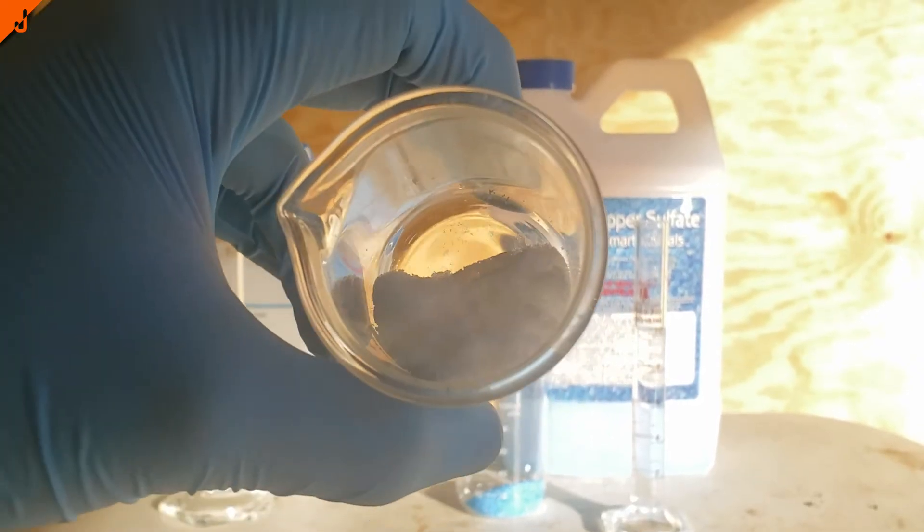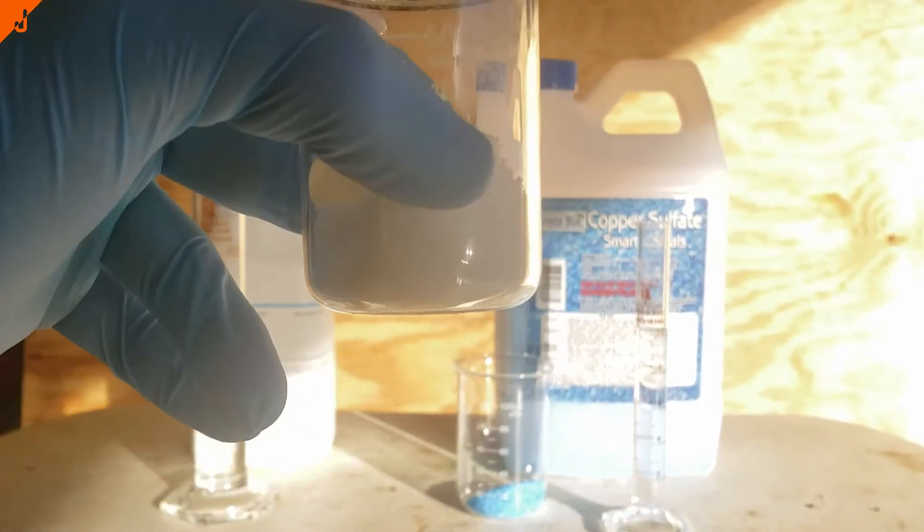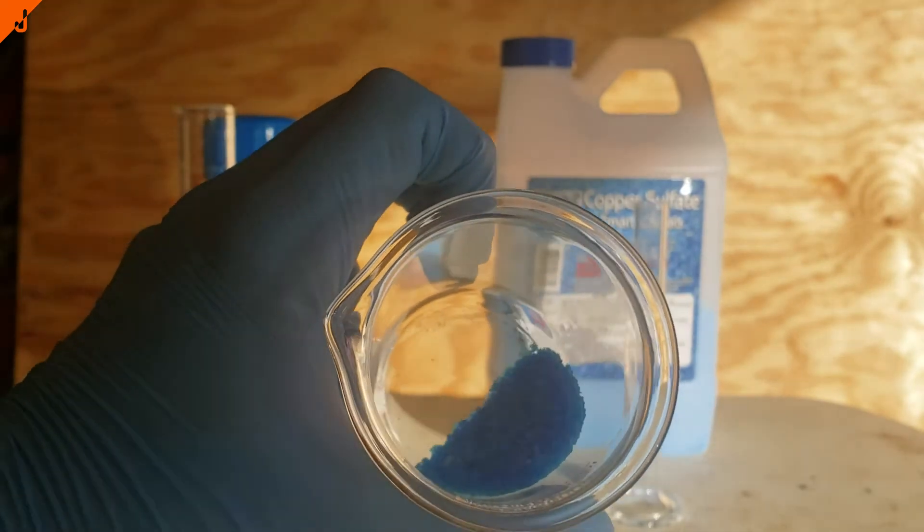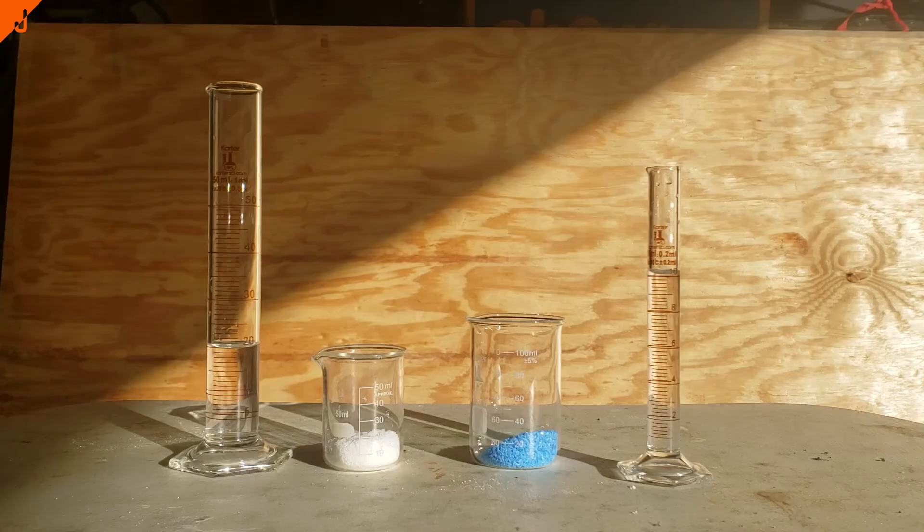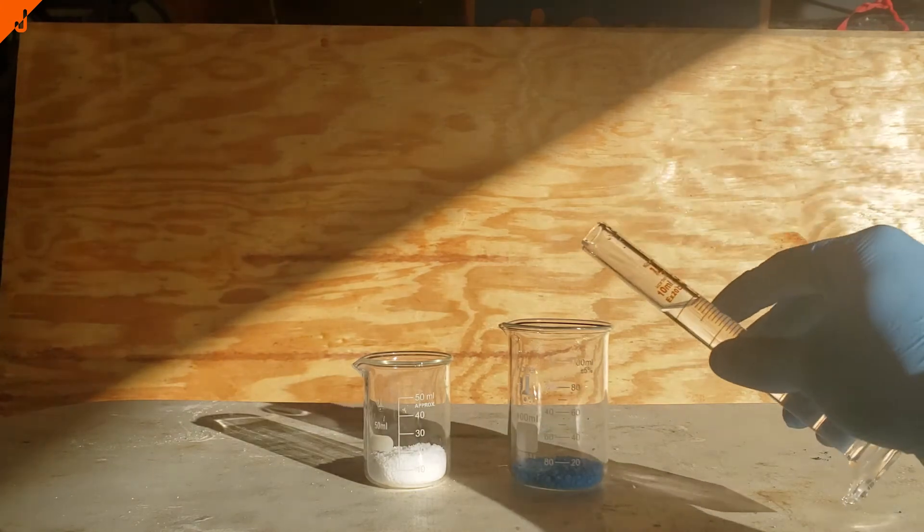First, I measured out 10 grams of potassium bromide and 6.7 grams of copper-2-sulfate. I then added water to each beaker.